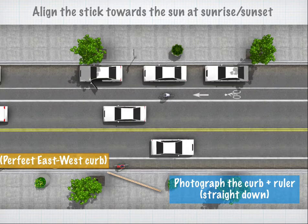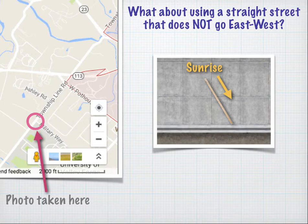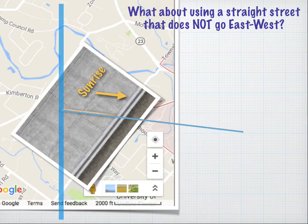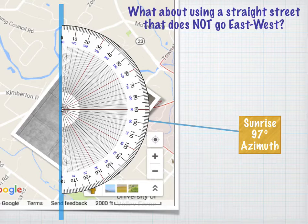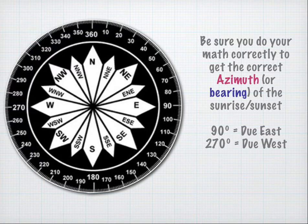Or you can take a photo from overhead — just aim your camera straight down at your yardstick, which is placed near the curb. If you couldn't find an east-west street but found a straight street, all you need to do is align the photo with the map, and then you can get the azimuth of the sunrise. Use a protractor and get the azimuth. Make sure you're doing the math correctly: 90 degrees is due east and 270 is due west, so finding the azimuths usually involves adding and subtracting. Just double-check your math.